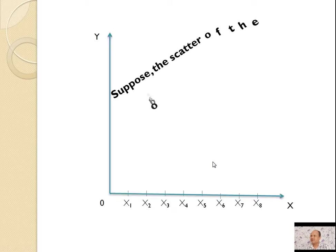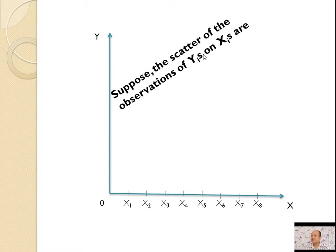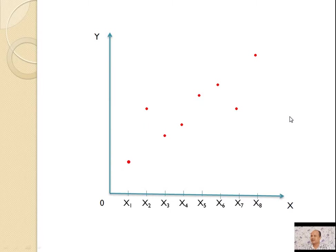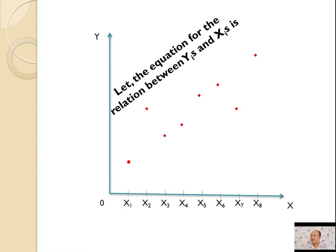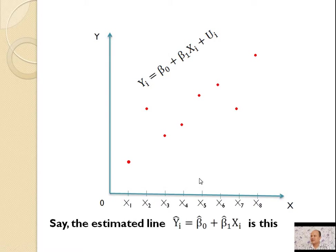Suppose the scatter of the observations of yi's on xi's are as shown. Let the equation for the relation between yi's and xi be: yi = β₀ + β₁x₁ + uᵢ. The estimated line is ŷᵢ = β̂₀ + β̂₁xᵢ, as shown here.